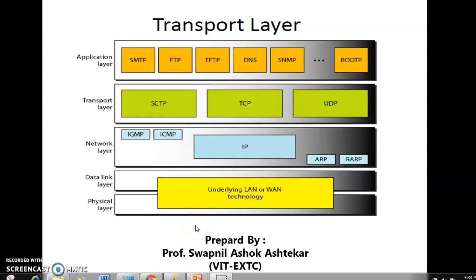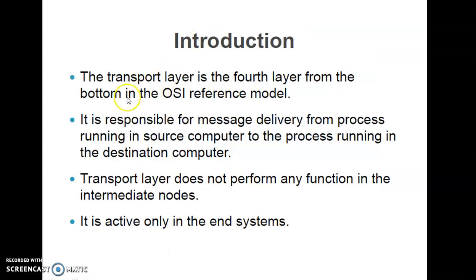Hello students, today our topic for discussion is a very important topic called the transport layer. The transport layer is the internet working layer in the OSI reference model, which lies in the middle of the OSI reference model. Today we'll discuss the transport layer in detail — this is just an introduction. The transport layer is the fourth layer from the bottom in the OSI reference model.